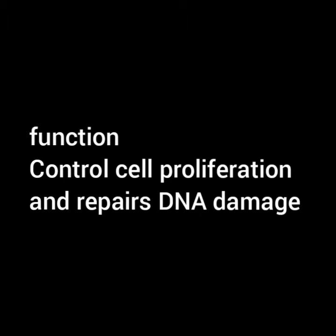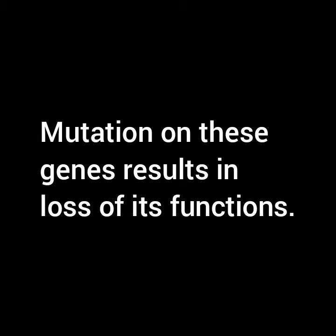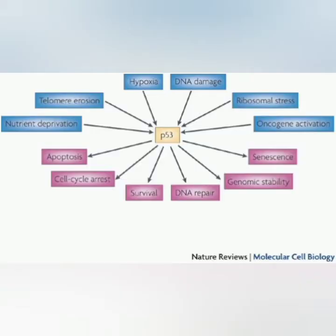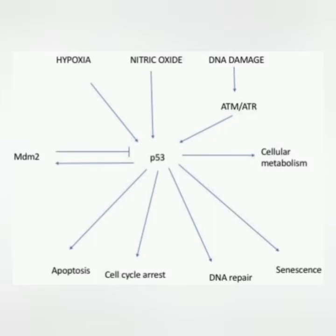If any mutation occurs in p53, it may result in alteration of these functions. p53 loses its function because of mutation, and mutations commonly include nonsense mutations or missense mutations. The composition of p53 in a normal cell will be different from that of a tumor cell. If a particular cell contains a higher amount of p53, those cells will undergo apoptosis, or the DNA contained within the cell will be corrected.